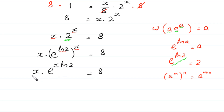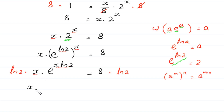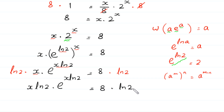To use the Lambert W function, we need the same expression in both the coefficient and the exponent of e. Currently, the exponent is x · ln 2, but the coefficient is just x. To make them match, we multiply both sides by ln 2, giving us (x · ln 2) · e^(x · ln 2) = 8 · ln 2.